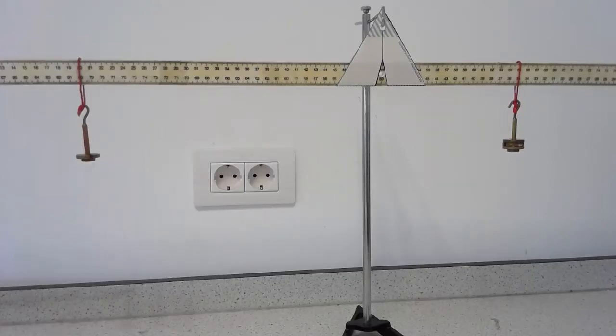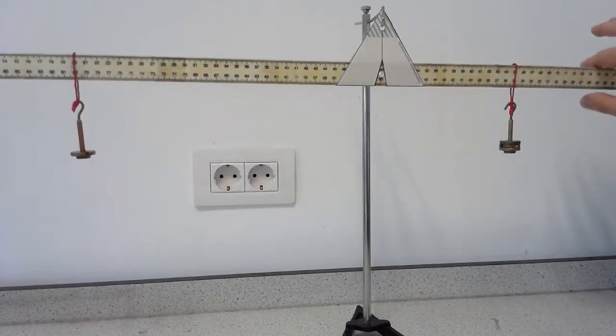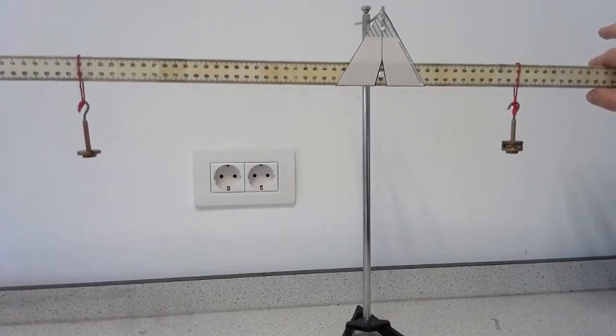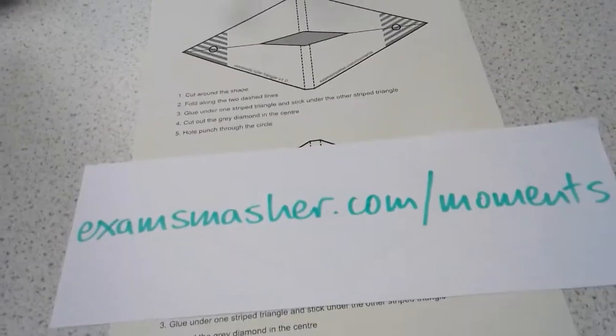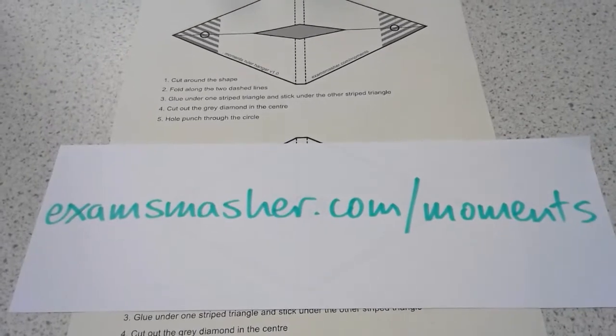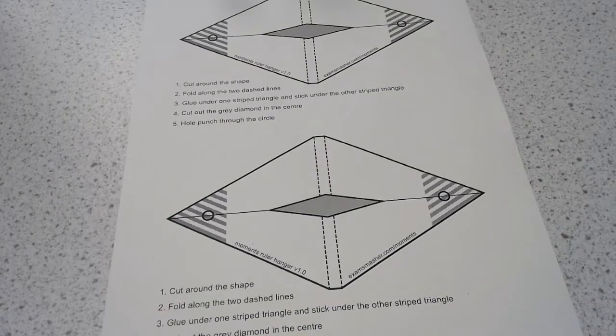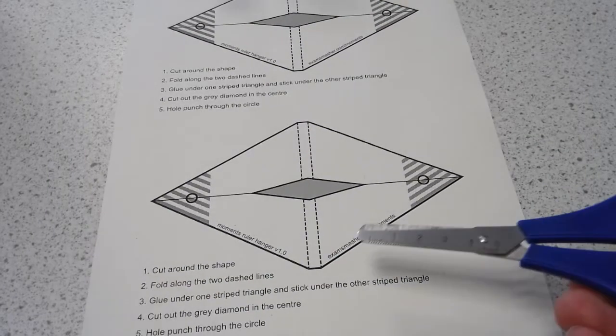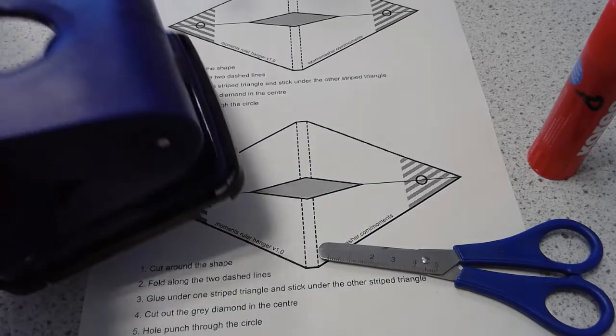Okay, in this video I'm going to show you how to make a very quick and simple paper hanger to enable you to do moments experiments like this. For this you will need the sheet printed off which you can get from examsmasher.com/moments. There's two per sheet, some scissors, glue, and a hole punch.